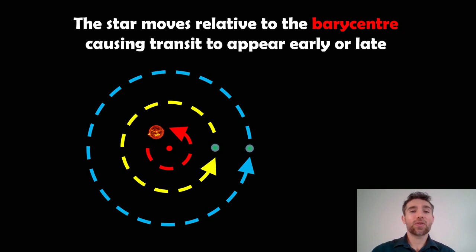So if we've got a barycentre, which is the red, we've got the star. And the star is not stationary in the middle of the system. It's orbiting the common centre of mass or the barycentre. And because of that, it can cause the transit to appear slightly earlier than it should do or slightly later than we would expect it to.